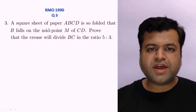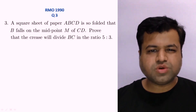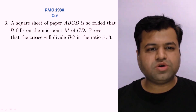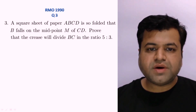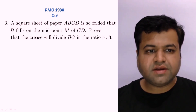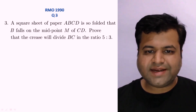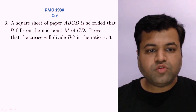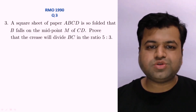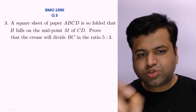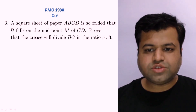Let's discuss question number 3 of RMO 1990. This is a geometry question and a simple application of the Pythagorean theorem. The question says: a square sheet of paper ABCD is folded such that point B falls on the midpoint M of side CD. Prove that the crease will divide BC in the ratio 5:3.